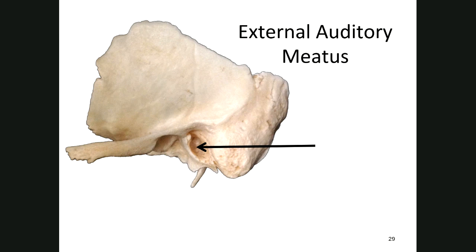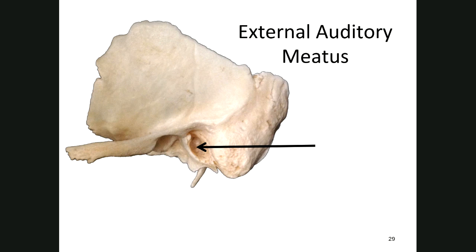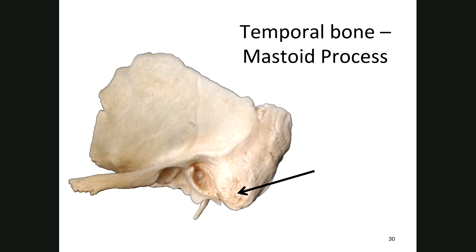On the external view, this opening — the external auditory meatus — is your ear canal. Just posterior to the external auditory meatus is the mastoid process.